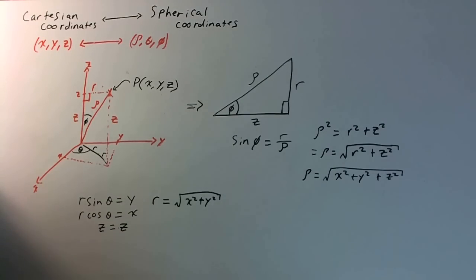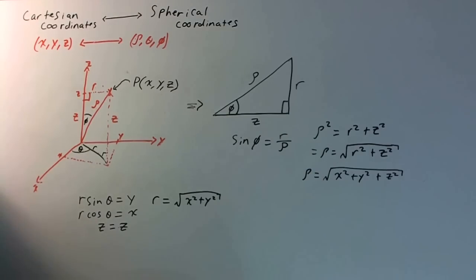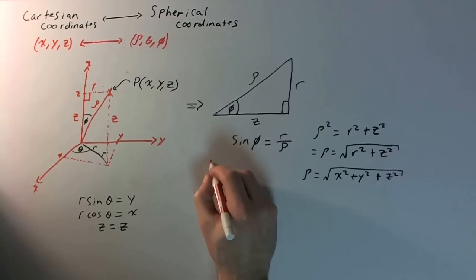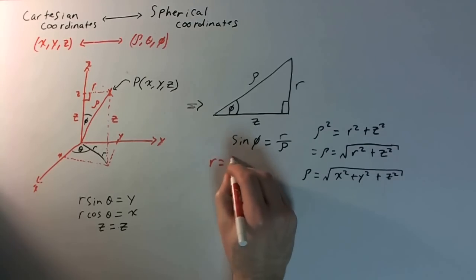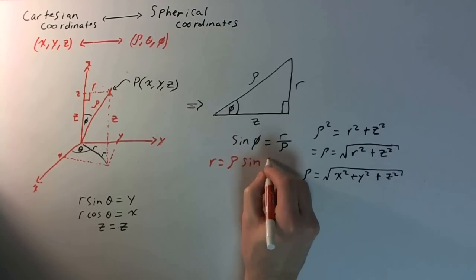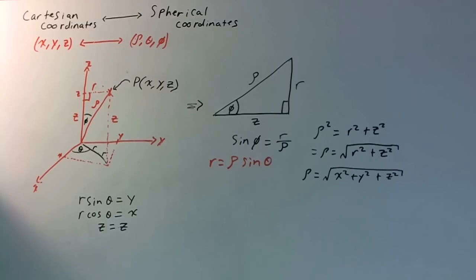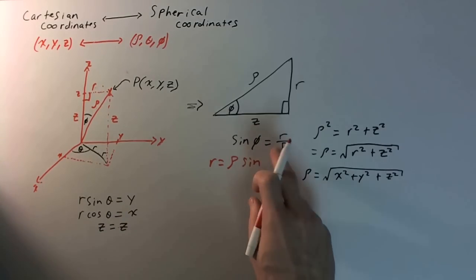Now, we need to know phi in terms of x, y, and z. So, if we solve for r, we get the fact that r is going to be equal to rho sine phi.